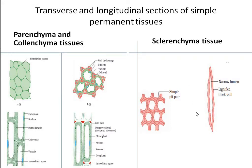Here is colenchyma and here is sclerenchyma. You can see the structure of cells in both sections. Parenchyma has thin-walled cells. In between the cells, there are intercellular spaces. Parenchyma cells have intercellular spaces. These cells contain cytoplasm, cell organelles, and a nucleus. Parenchyma cells are thin-walled and contain cytoplasm, with intercellular spaces between them.